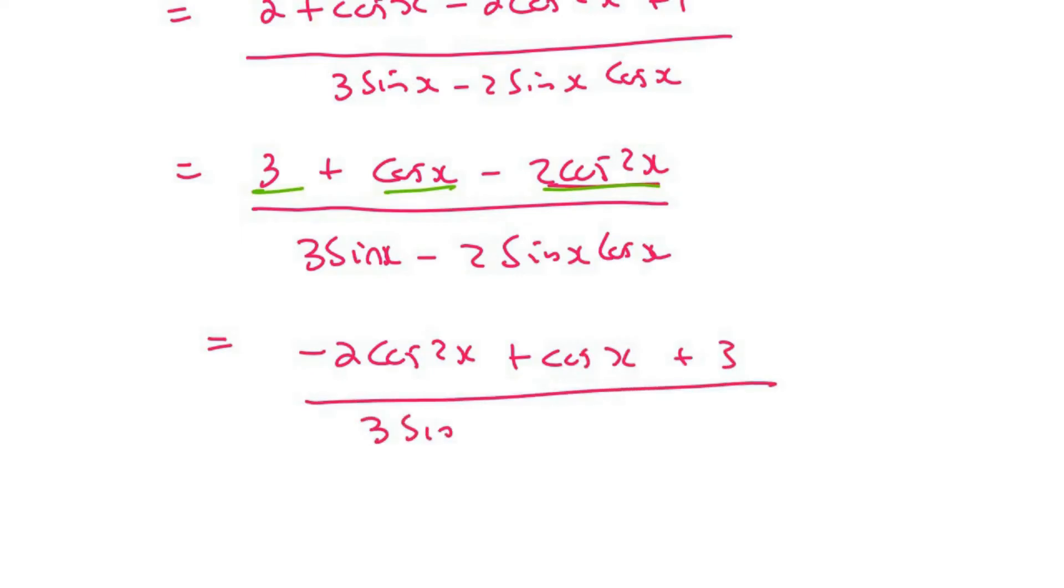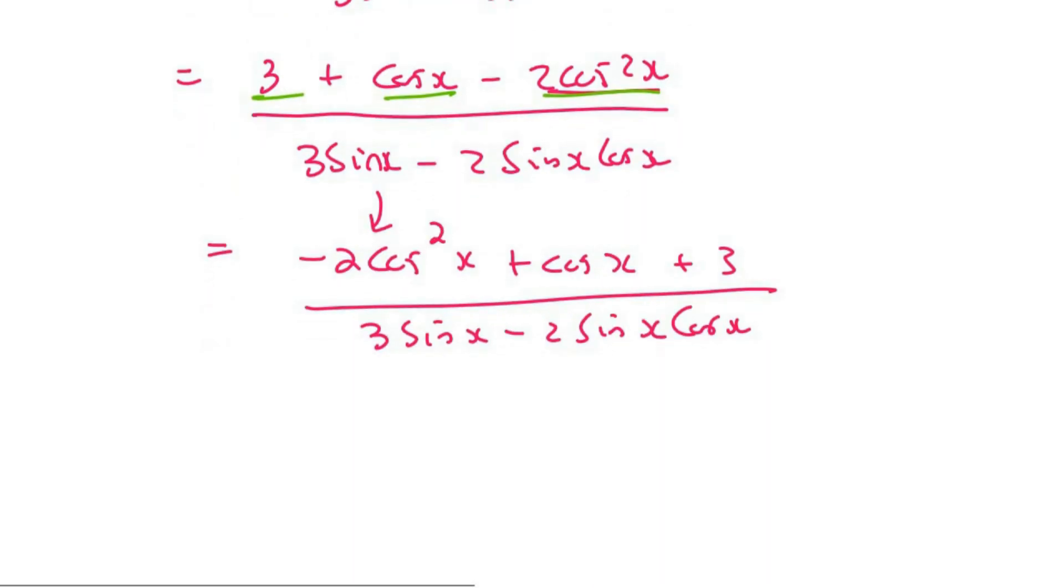Now I personally, I'm sure you are the same, or maybe not, but I don't like to factorize when I've got a negative for the x squared term. So what I'm going to do is I'm going to take out a negative as a common factor. Now I can't get rid of that negative because this is not an equation. And it's going to become 2 cos²x minus cosx minus 3. And then at the bottom, we're still left with 3 sinx minus 2 sinx cosx.